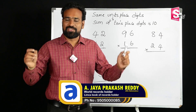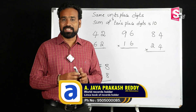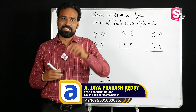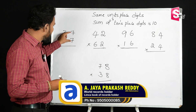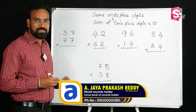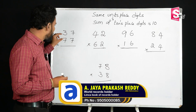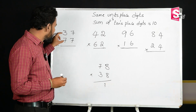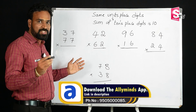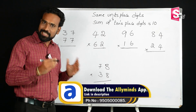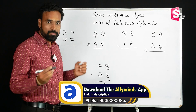we are going to learn a special type of multiplication for two double-digit numbers with the same ones digits. When the sum of the tens digits is 10, we are going to apply this method.